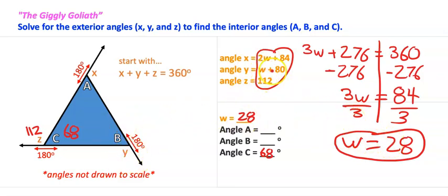Angle Y is W plus 80. So angle Y has got to be 28 plus 80, which makes it 108. So angle Y is 108. So if angle Y is 108, angle B has got to be 72.